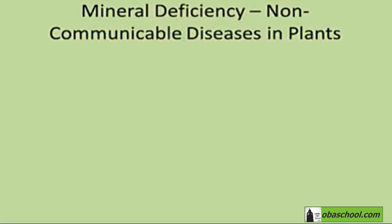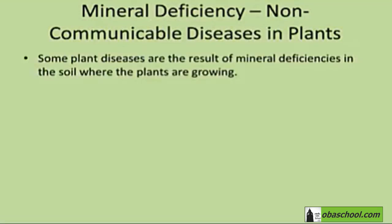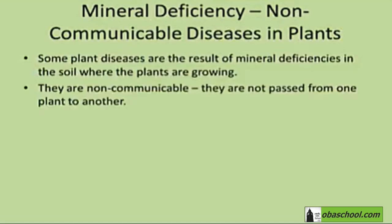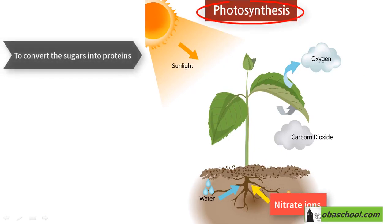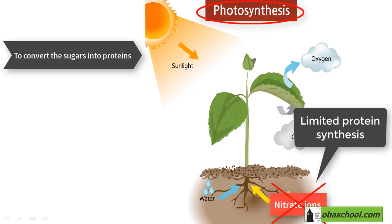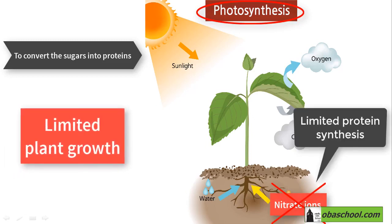Some plant diseases are the result of mineral deficiencies in the soil where the plants are growing. They are non-communicable — not passed from one plant to another; it's not an infection. For example, plants need a good supply of nitrate ions from the soil to convert the sugars made in photosynthesis into proteins, which are needed for growth and protein synthesis. If there is a nitrate deficiency in the soil, protein growth will be limited, so the growth of the plants will be limited and they will not produce a crop properly.